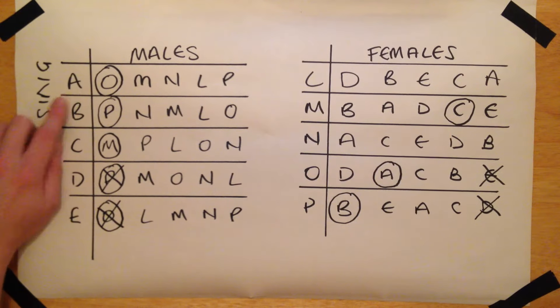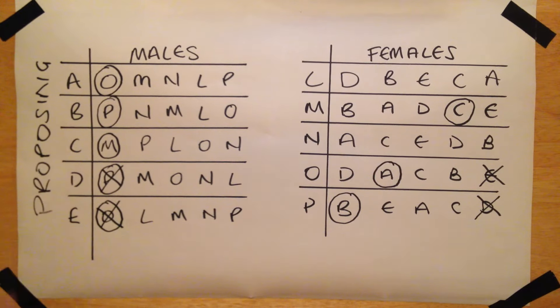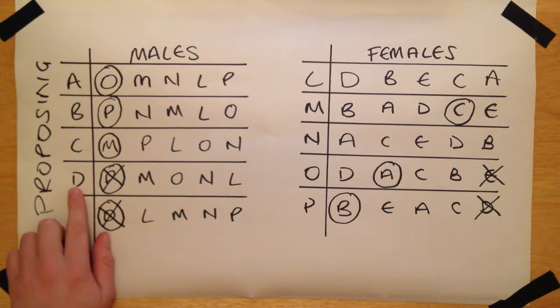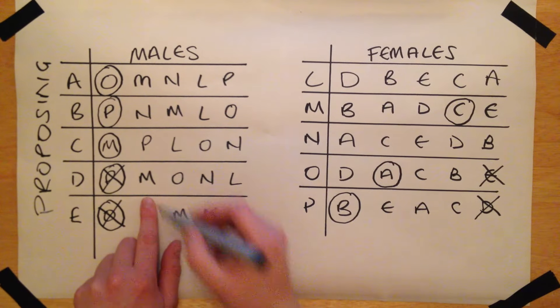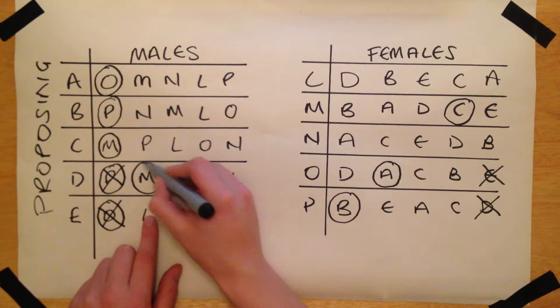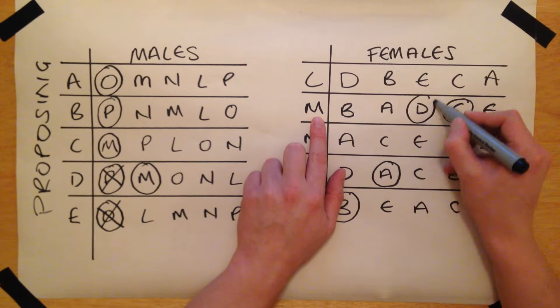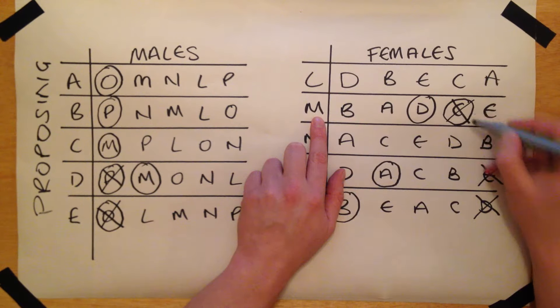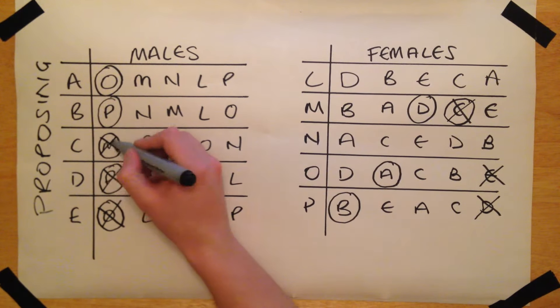At this point, A, B and C are already engaged, and so do not attempt any more proposals. D still has no fiancé, and so proposes to his next most preferable choice, who has not rejected him, M. M prefers D to her previous offer from C, and so she dumps C, and is now engaged to D.